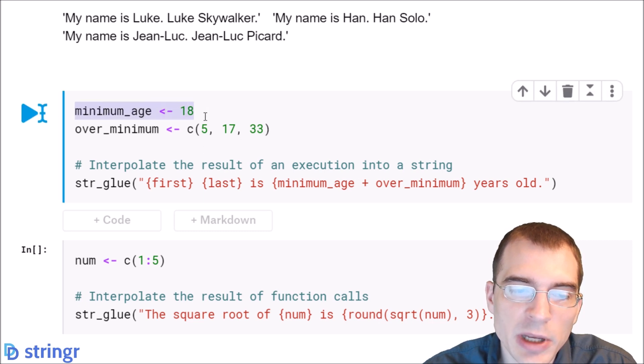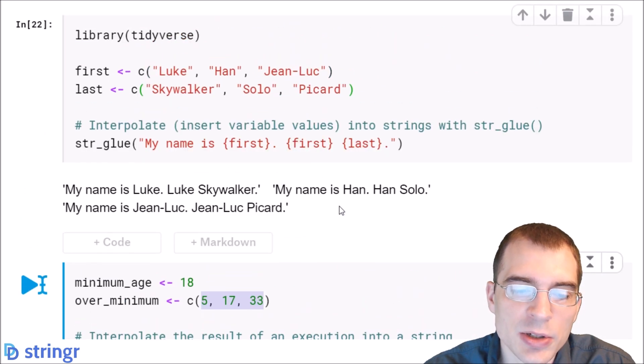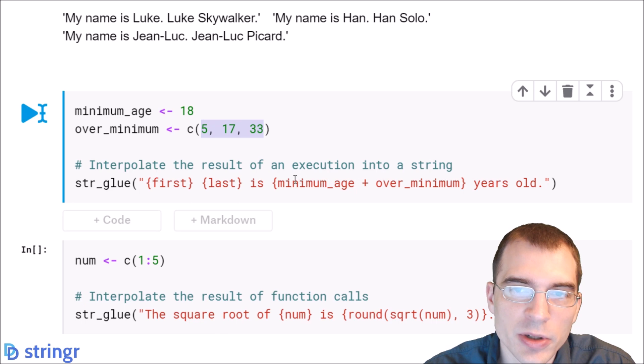Here we've set a minimum age variable. We've set some other over minimum variables, which tells how much older than 18 different characters might be. And here we're going to do a string interpolation using some of the variables we stored above. But we're also going to do a calculation that is going to interpolate in a minimum age plus how much over the minimum that character is. Since each of these numbers is aligned with what might be a reasonable age for these characters, this executed string here is going to print out the character's first and last name, then the age that they might be, years old, all as one string. And it will do that three times because they're passing in a vector of length three. Let's run this and see what the result is.